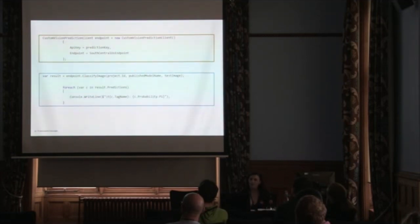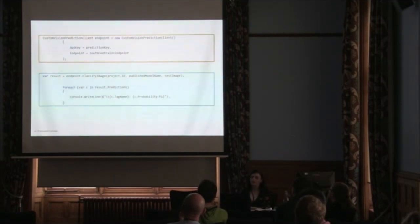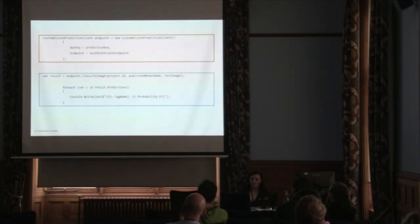Once the model is trained, we can export it as a Linux Docker file and deploy it on Azure as an IoT Edge service. We can create an app that will choose three outfits based on ones that I have tagged that I like or don't like. I can do it based on weather predictions and connect it to a weather API. I can also run this through the Computer Vision service to start building out object detection applications.